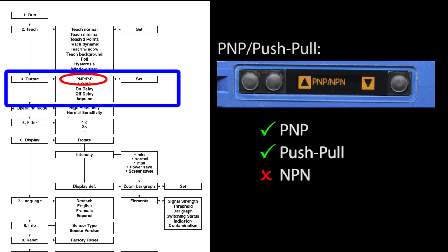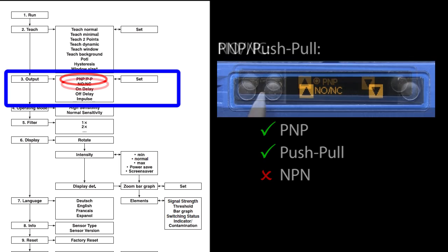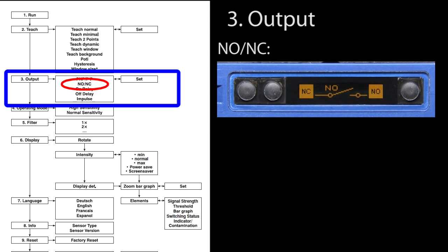You can select the output type to be PNP or push and pull. The title of this submenu is PNP MPN and there is a menu selection for MPN but you can't actually select it on this sensor because the extra pin you would need to add the MPN output is used for a teach input. This is just a generic menu that is used on multiple sensors. You can select normally open or normally closed. Some folks call that light on or dark on.